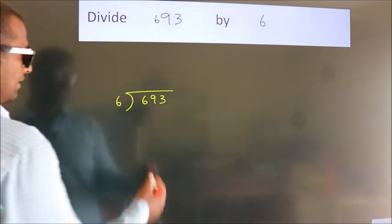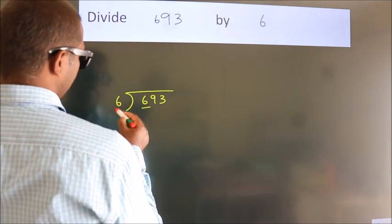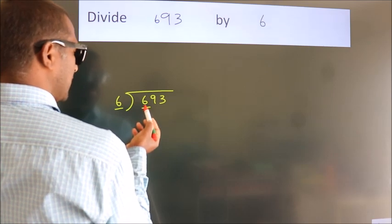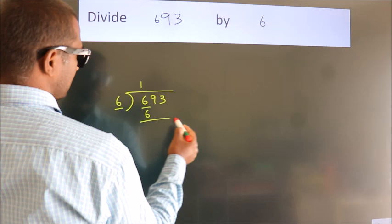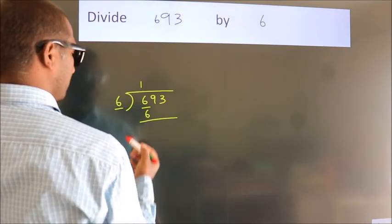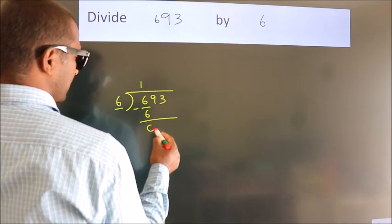Next, here we have 6, here 6. When do we get 6? In 6 table, 6 once, 6. Now we should subtract. We get 0.